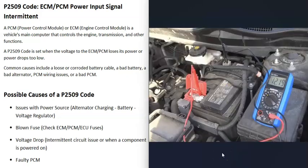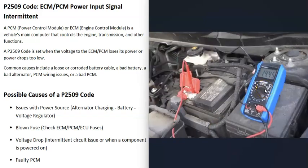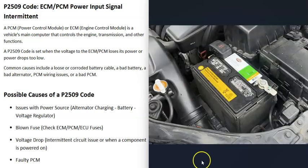If you have a multimeter, you can test the alternator output. Set your meter to DC volts and check the battery voltage with the engine off — it should read around 12.2 to 12.5 volts. Then start the engine; the alternator should output around 14 to 14.5 volts. If the meter still reads 12 volts, it's not outputting correctly. If it reads 15 or 16 volts, it's overcharging — either way, there's an issue.